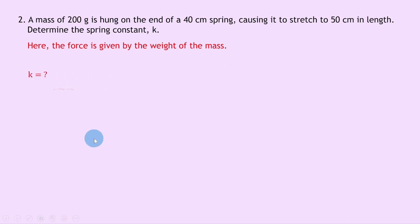We're trying to find the spring constant k. We know that the mass is 200 grams, which is the same as 0.2 kilograms. The displacement y of the spring from its equilibrium position will be given by the 50 centimeters which it's stretched to minus the 40 centimeters which was its original length, which gives us 10 centimeters difference, which is the same as 0.1 meters.